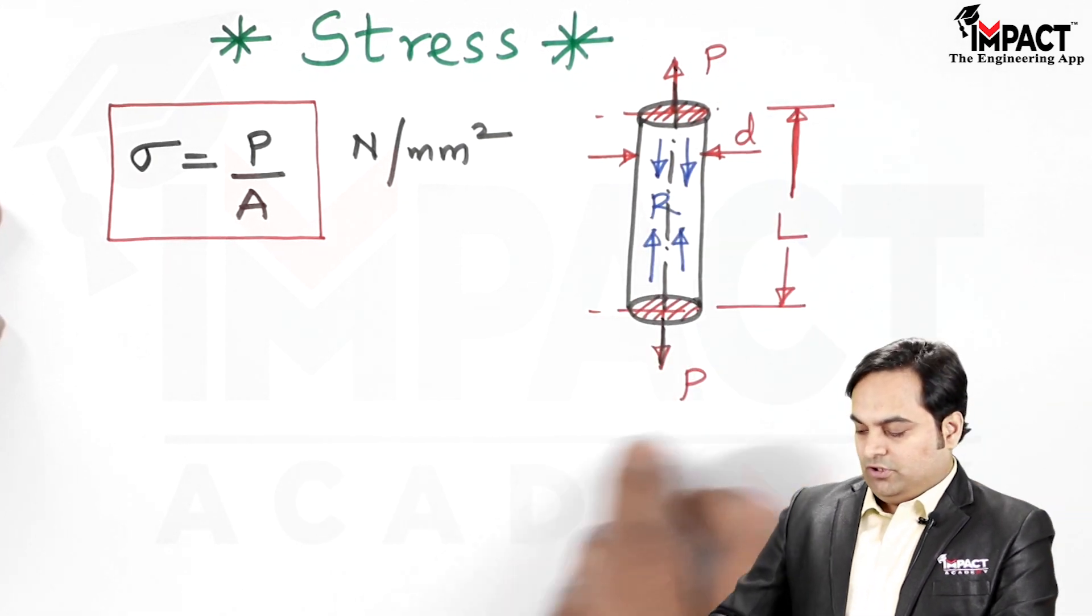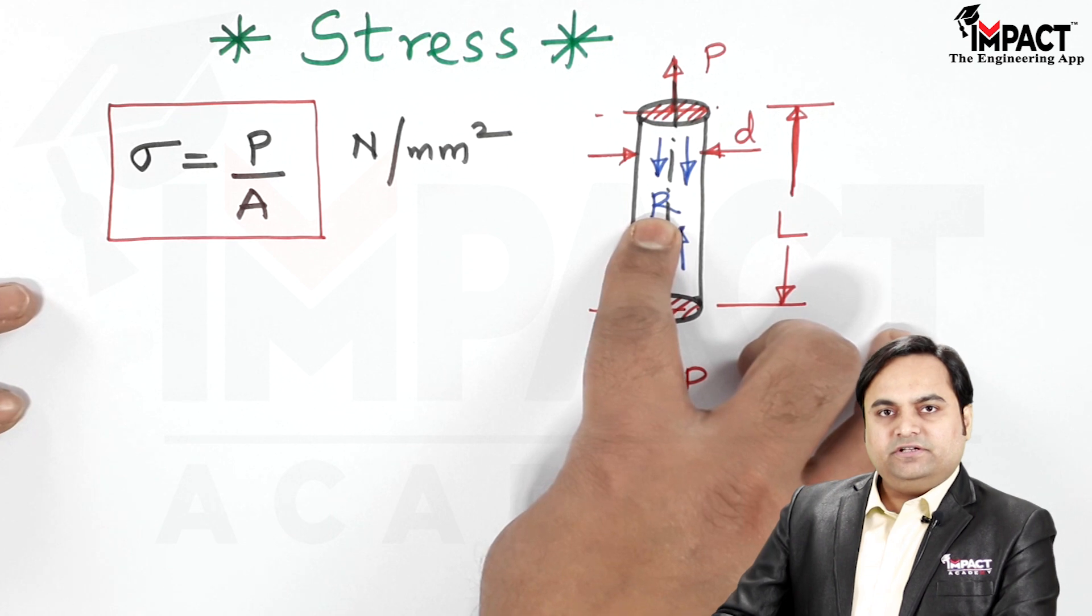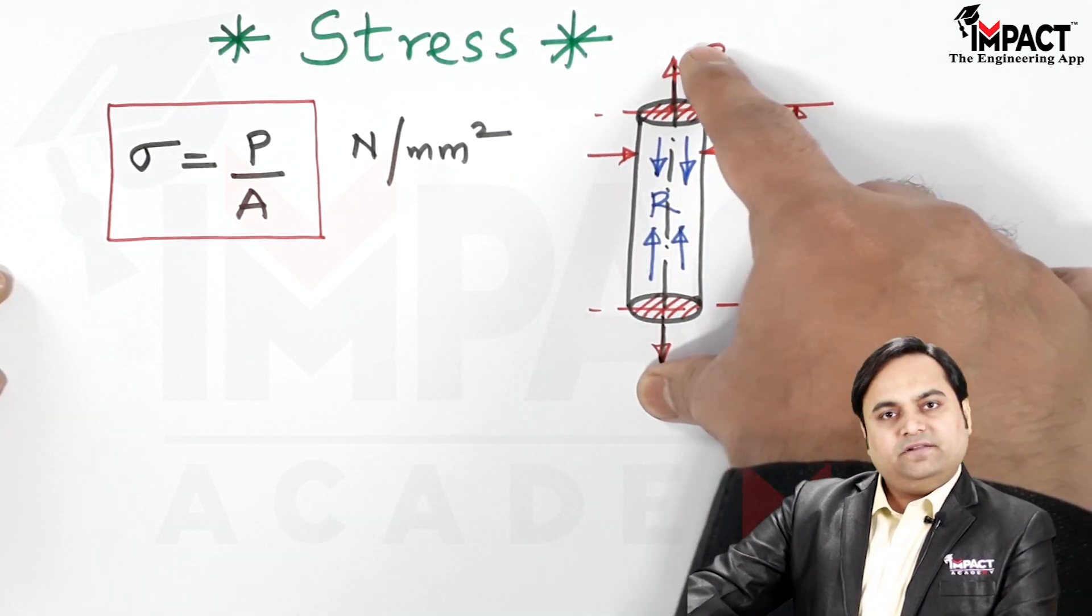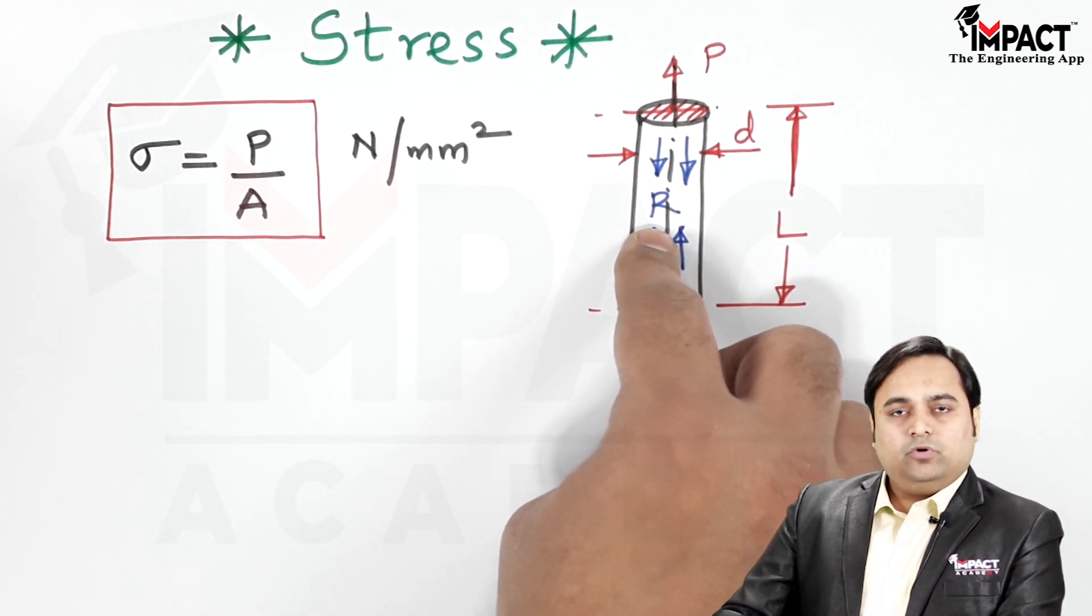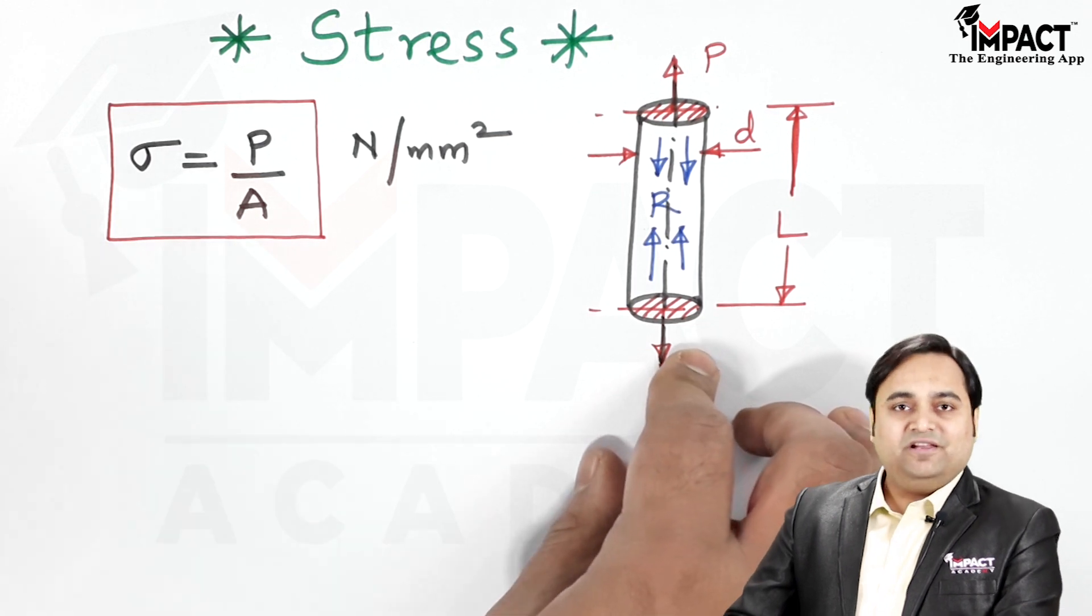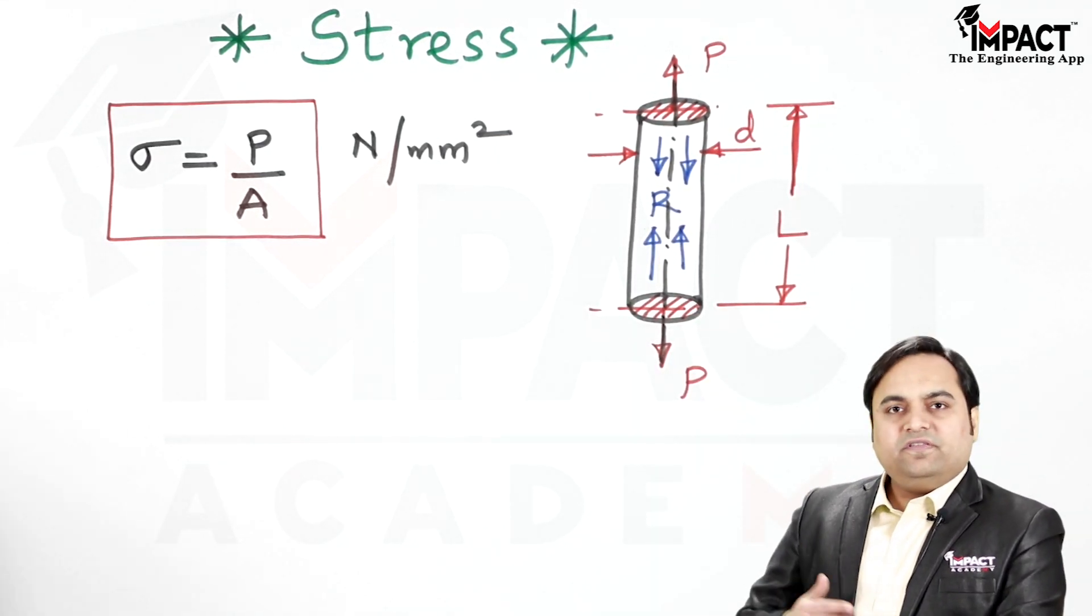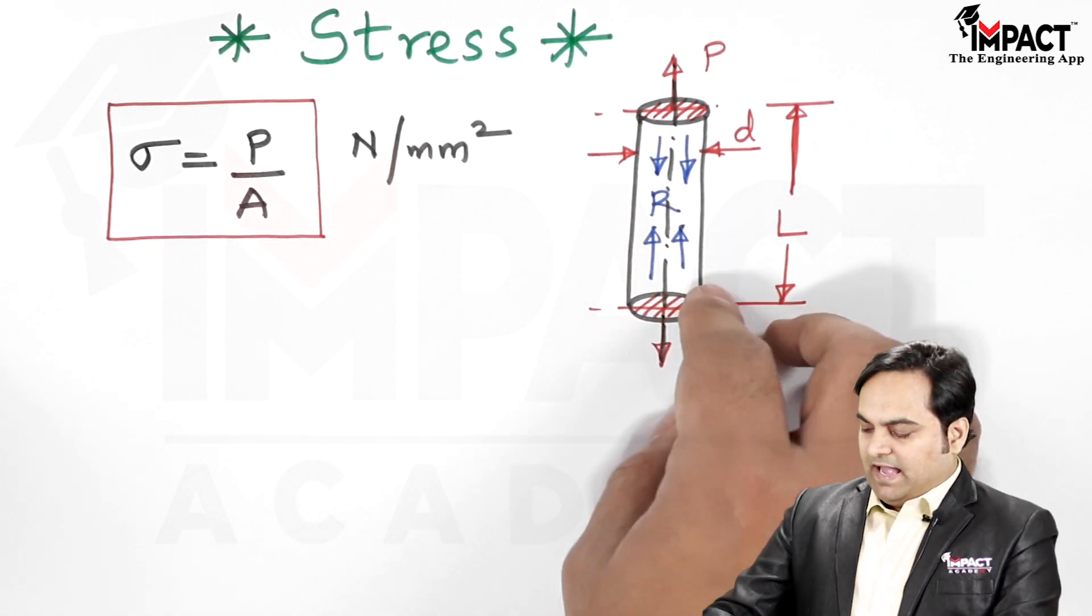As we can see, when the load is applied, then only the internal resistance is set up. If there is no external loading at that time, there is no internal resistance. It means the stress will be zero when the load is not applied to the element, but the moment the load is applied and it goes on increasing gradually, stress will also go on increasing gradually.